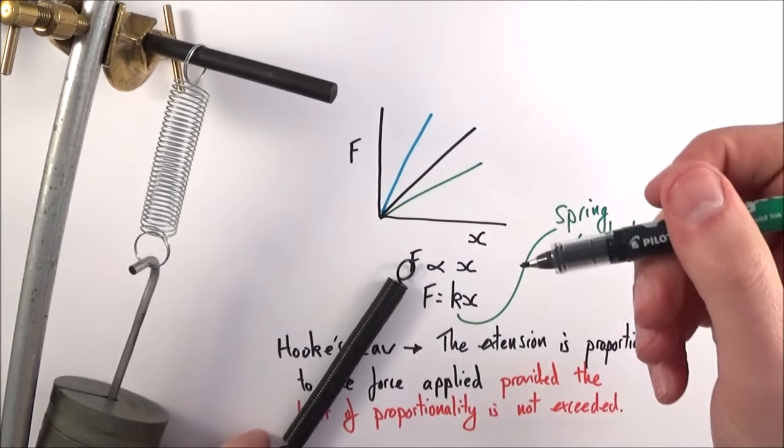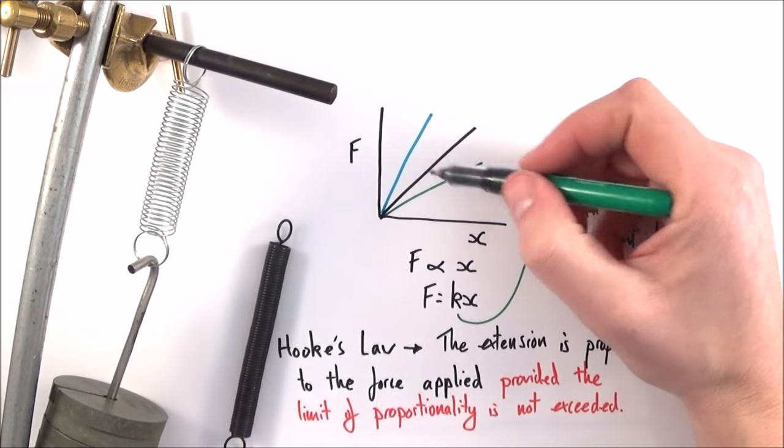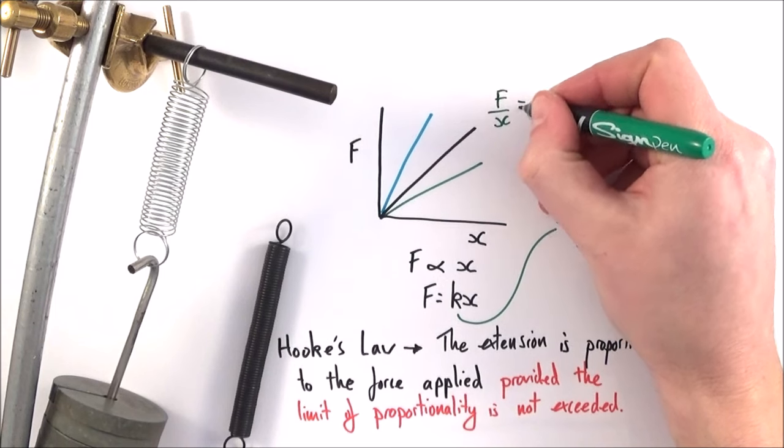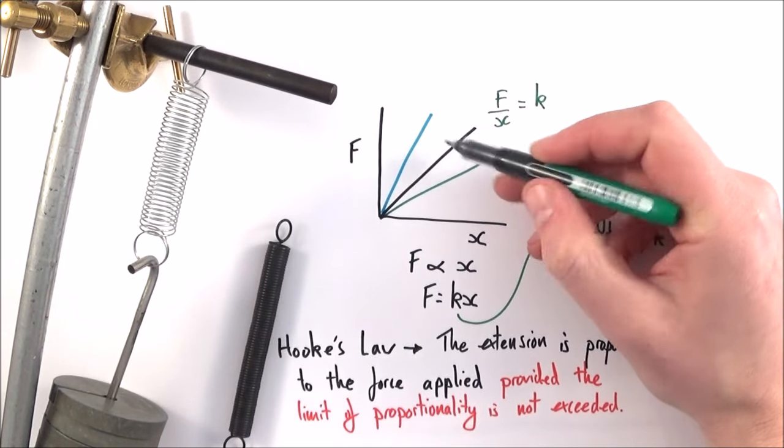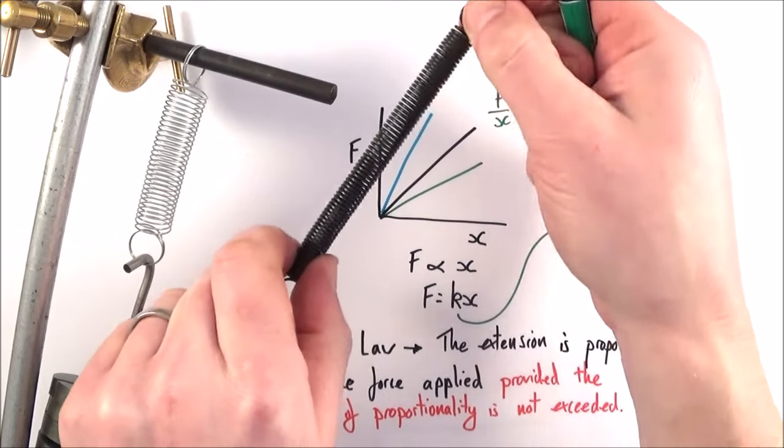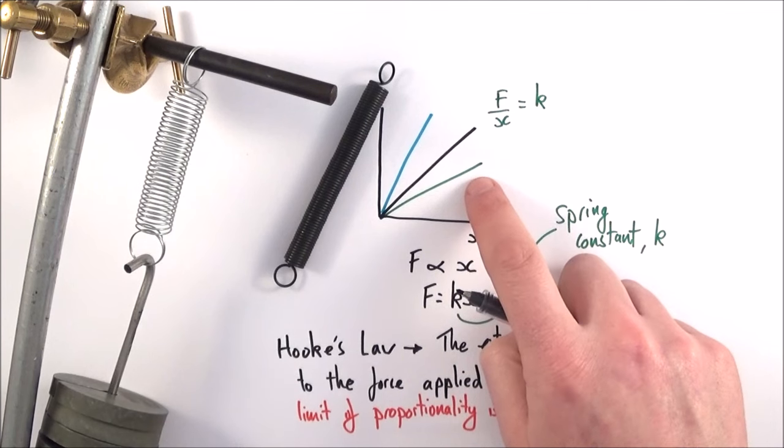The important thing to note is on this graph, the gradient is equal to the change in force divided by the change in extension—effectively F over x. That means the gradient is equal to the spring constant. This blue one might be this stiff spring here. The spring over here might be more like the green line.